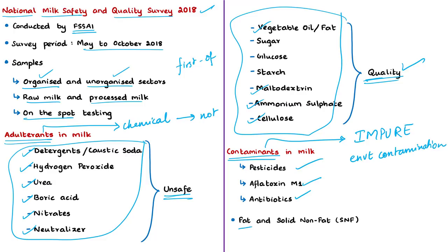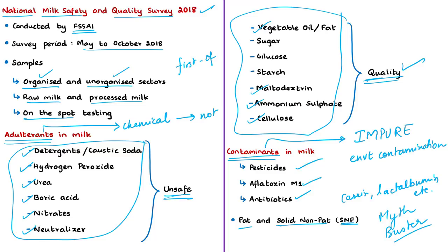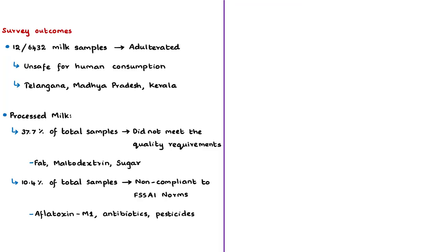According to FSSAI, this survey and its outcomes are myth-busters, proving that rumors about widespread adulteration are wrong. The survey results indicate that milk sold in India is largely safe for consumption. The survey found that 12 out of 6,000 samples of milk were adulterated — unsafe for human consumption. Of the 12 adulterated samples, 9 were from Telangana, 2 from Madhya Pradesh, and 1 from Kerala.